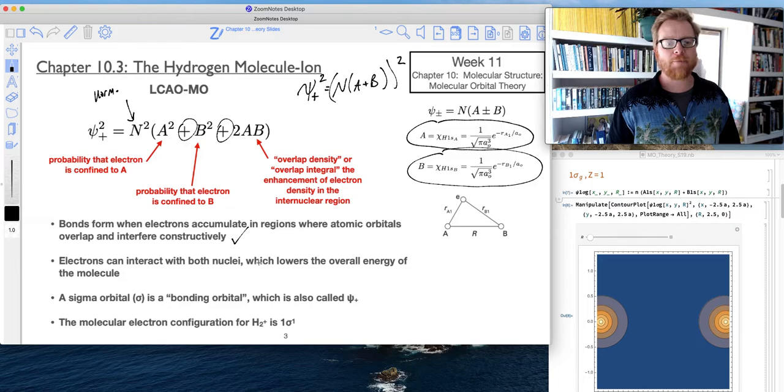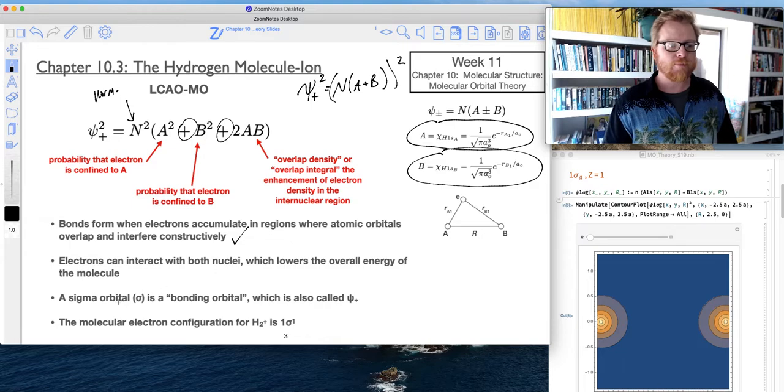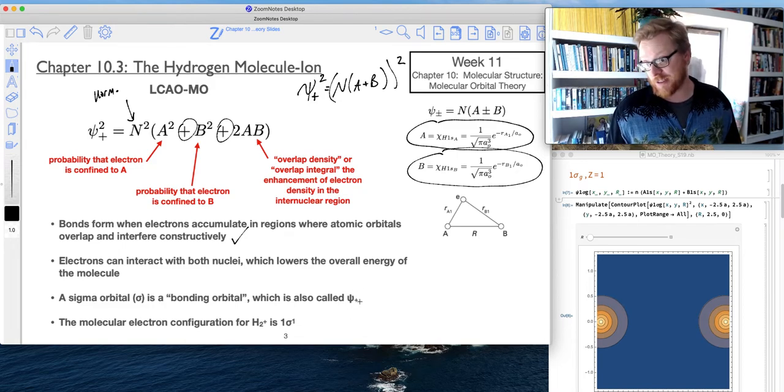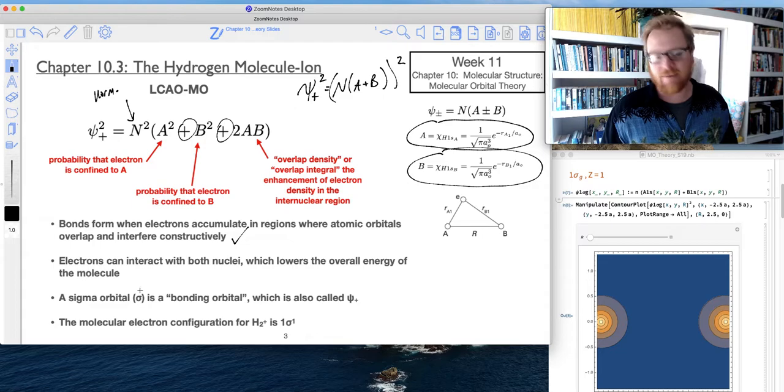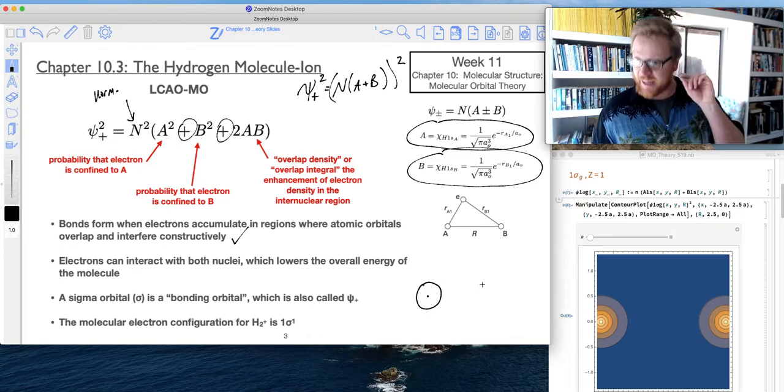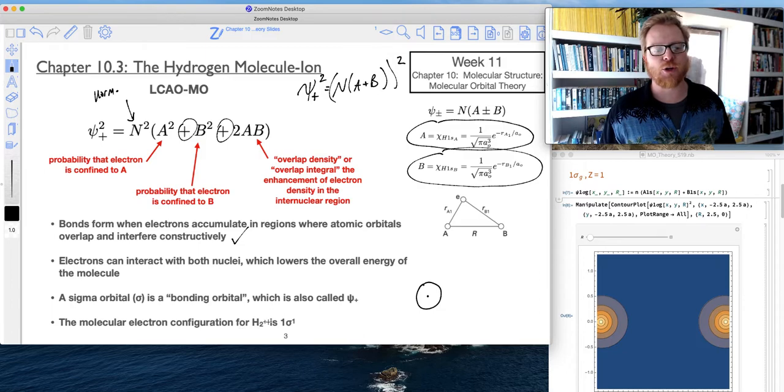Electrons can interact with both nuclei, which lowers the overall energy of the molecule relative to the energy of the individual atoms, and we'll see that soon. A sigma orbital is a bonding orbital, which is also called psi plus in this simple example right here. And similarly, our sigma orbital, just like in valence bond theory, is cylindrically symmetrical about the internuclear axis. And the molecular electron configuration for H2+ is given as 1σ1, technically 1σ_g1, and we're going to talk about what that extra G means momentarily.